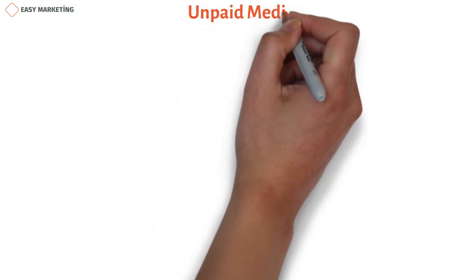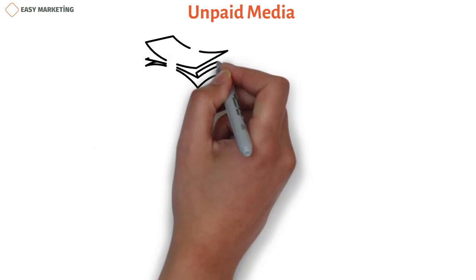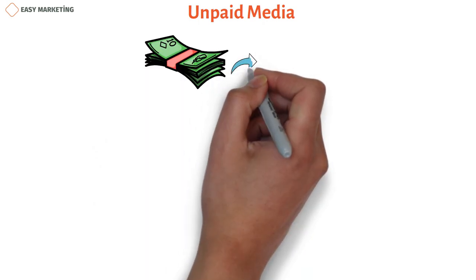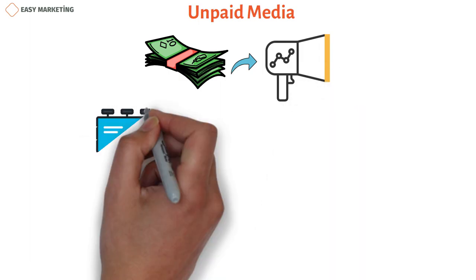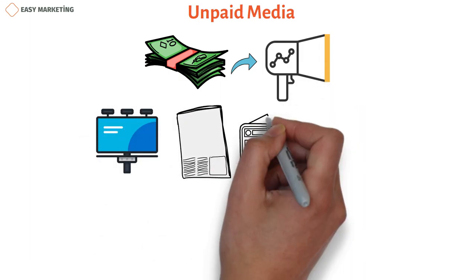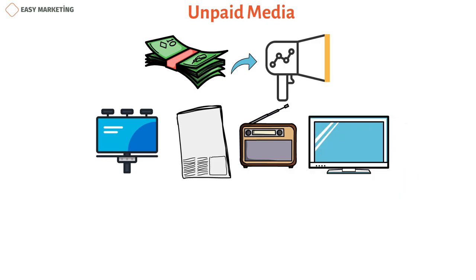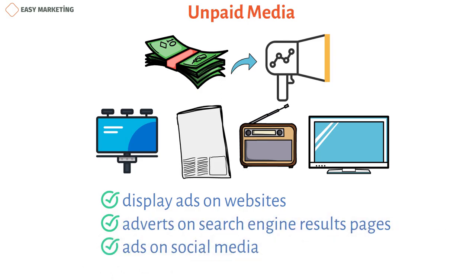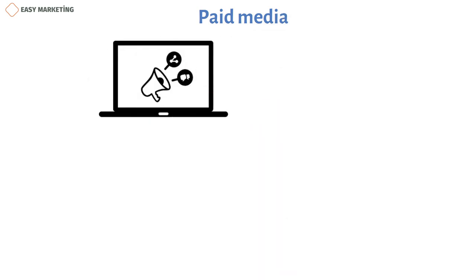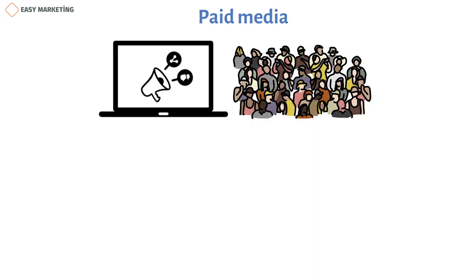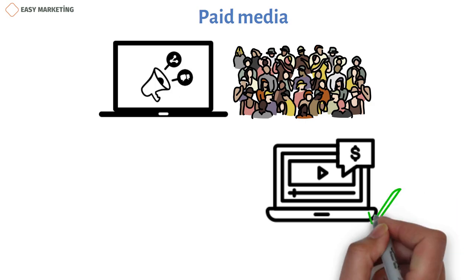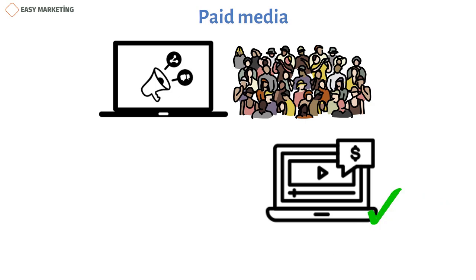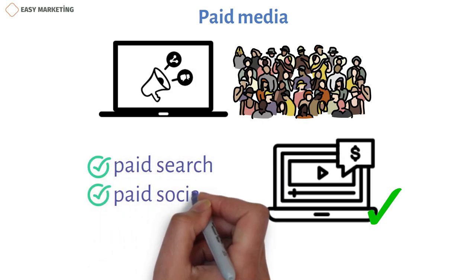Paid Media: Any form of marketing that you cannot carry out for free is included in paid media. This can include conventional advertising, such as billboards, newspaper, radio, and TV commercials. Online, this includes display ads on websites, adverts on search engine results pages, and ads on social media. Paid marketing material is a great technique to reach your intended target audience in digital marketing because of its sophisticated targeting choices. There are many benefits to using paid media in your marketing approach, but it is entirely up to you whether to utilize paid search, paid social, or both.